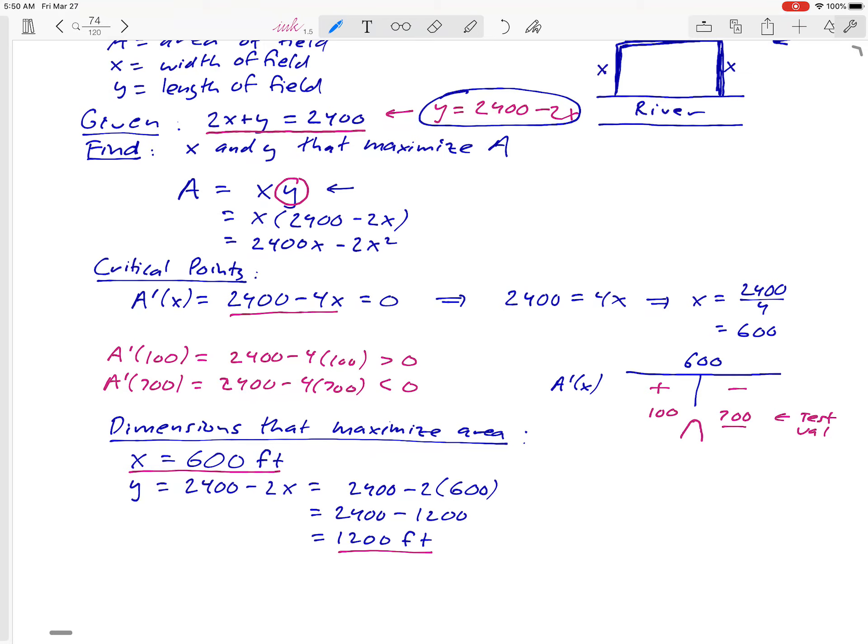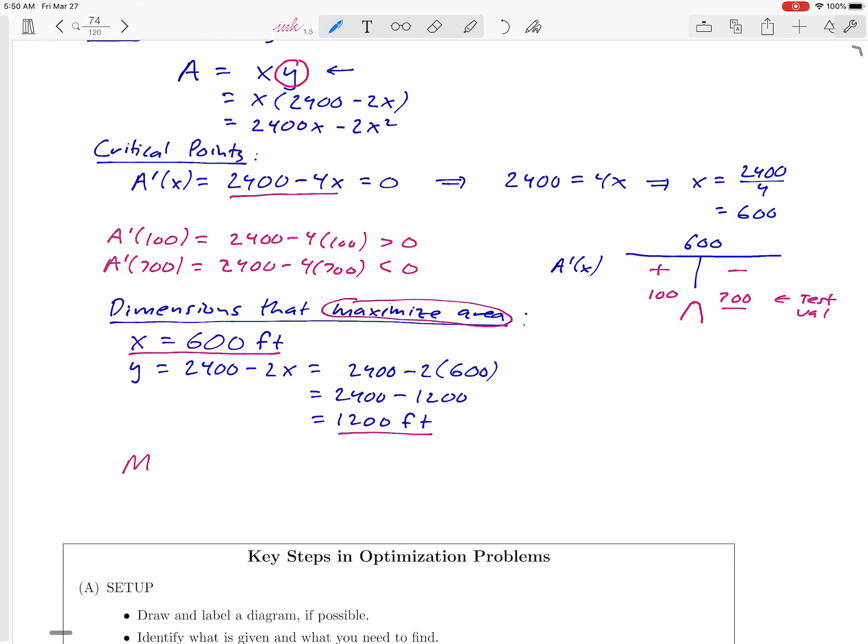Now technically they didn't ask us to do this in the problem, but we could go one step further and maybe ask the question, what is the maximum area of the field? We're in a position where we can figure that out as well. We have a formula for area that looked like x times y, and we know what x and y are, so let's fill those in. 600 times 1200, and if we do the algebra there, that's going to give us a pretty big number of 720,000, I believe. What would the units on that number be that we just got? How do we measure area? If x and y are in feet, this must be in square feet. So there's the maximum area of our field.